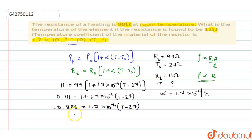This 1.7 again we shall take to the LHS. So, this gives you 0.888 divided by 1.7, which comes out to be minus 0.522 into 10 power plus 4, because this comes to the numerator. So, it becomes 10 power plus 4 which is equal to T minus 27.